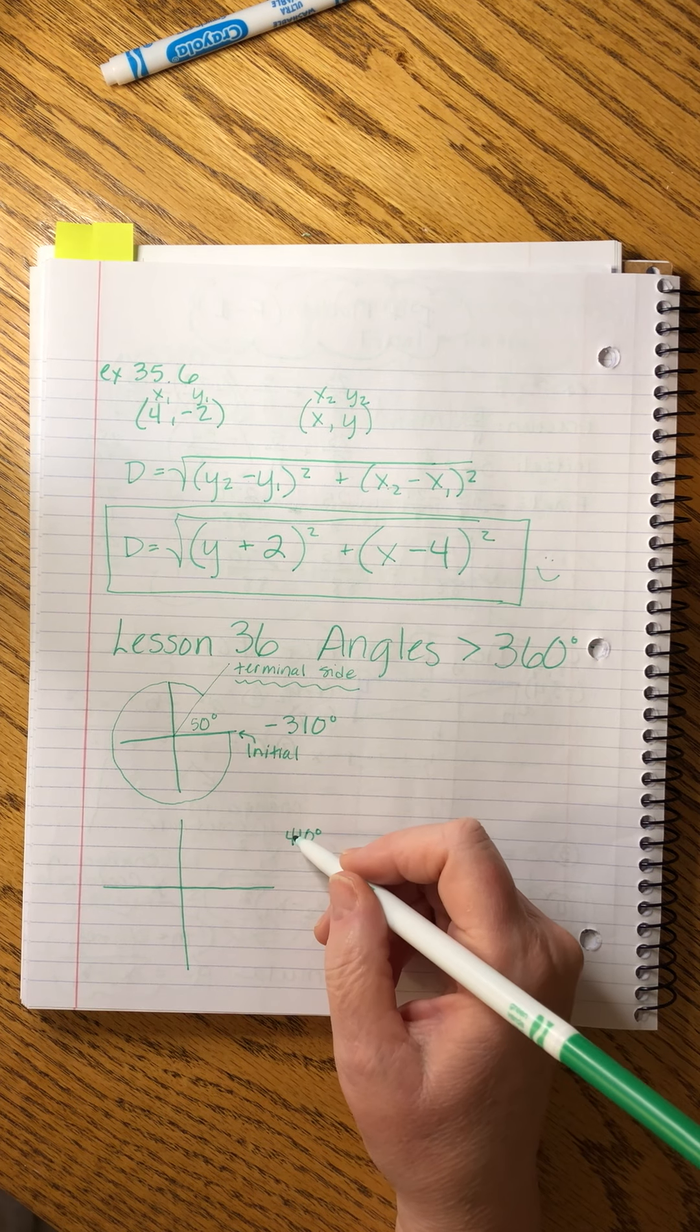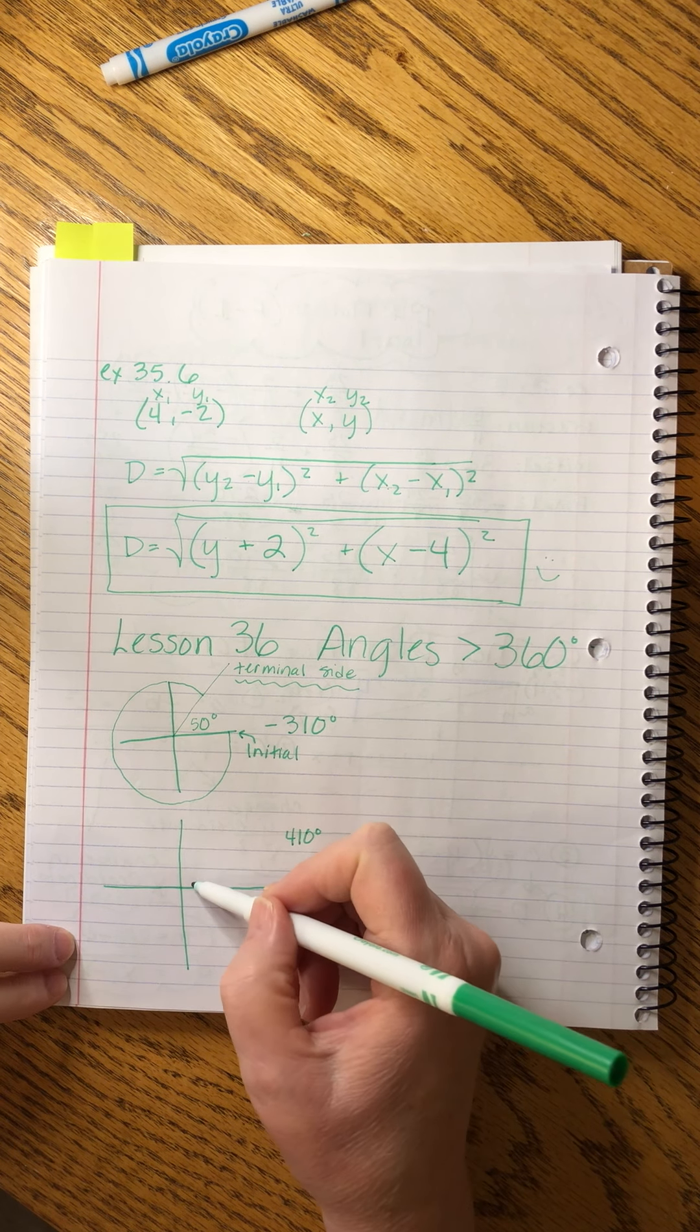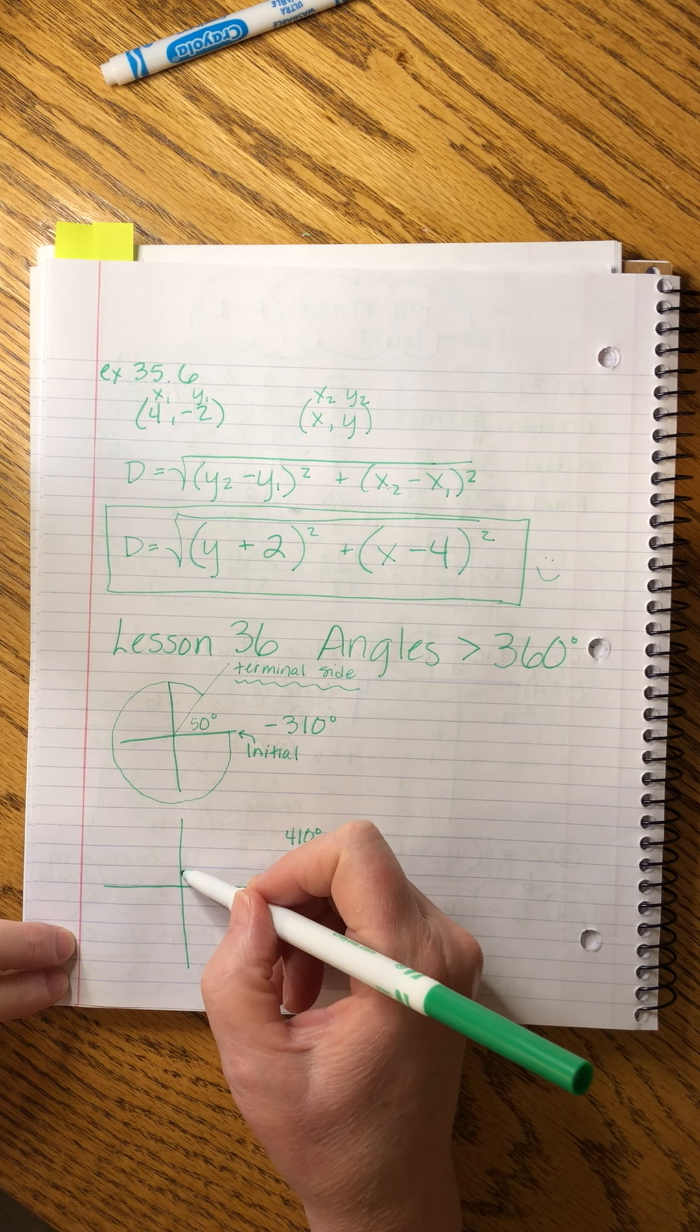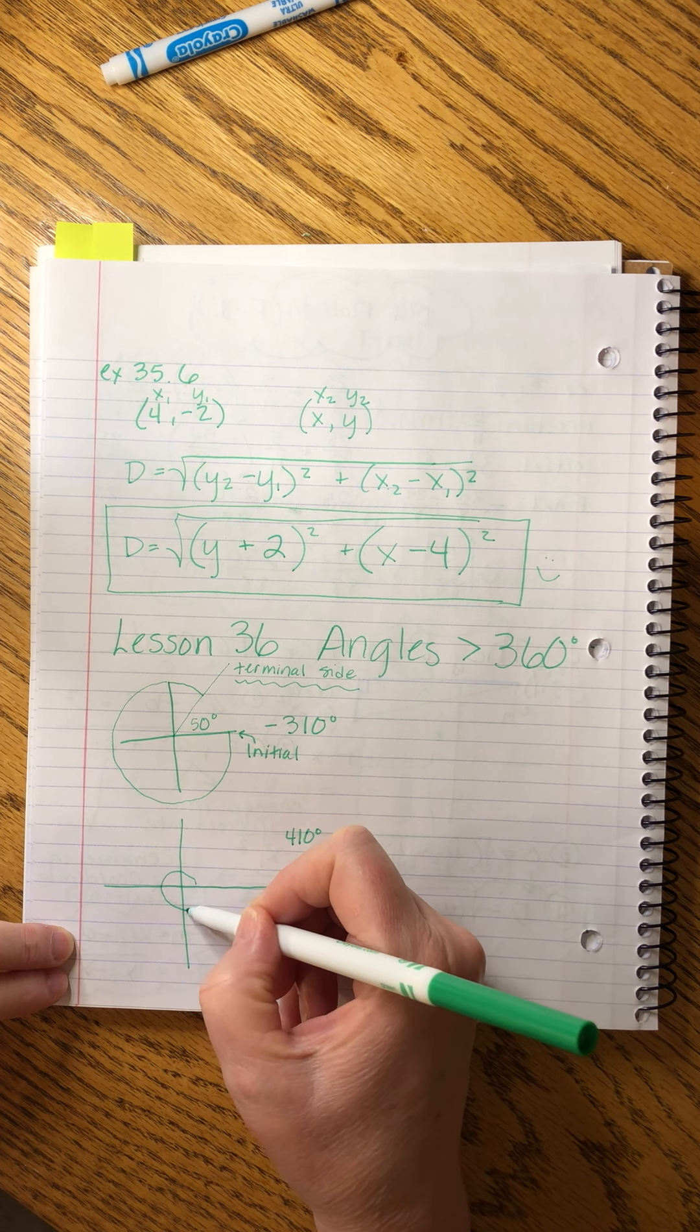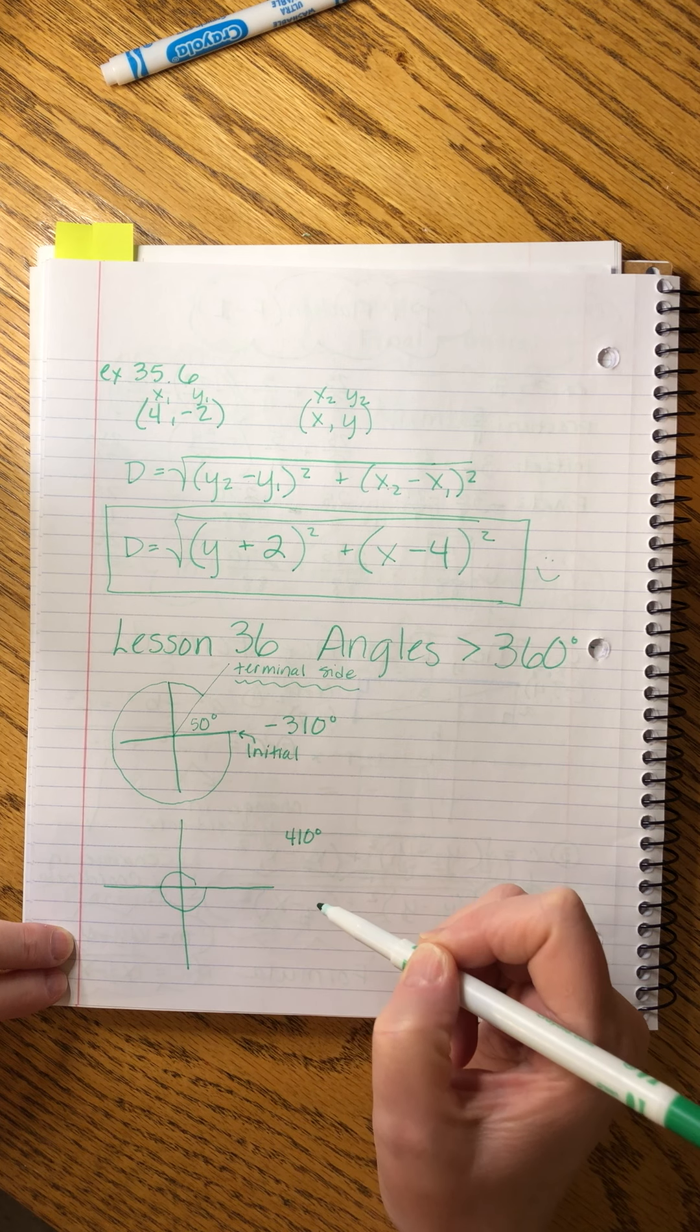Well that's positive, so we know we're going to go this way. 90, 180, 270, 360, we're still going.